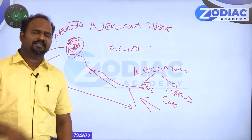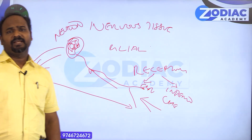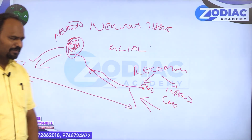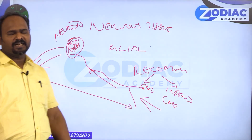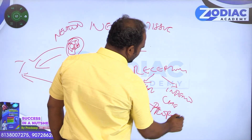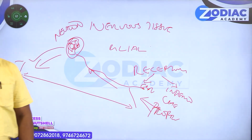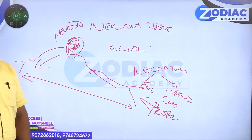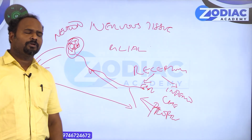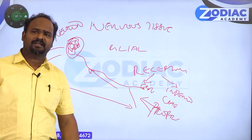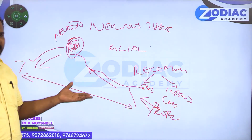Baroreceptors sense the partial pressure of gases — PO2 and PCO2 levels are monitored by these receptors. The third type of interoceptor is the proprioceptor, which sends information about the positioning of the body parts. So chemoreceptors, baroreceptors, and proprioceptors are present inside the body as interoceptors.